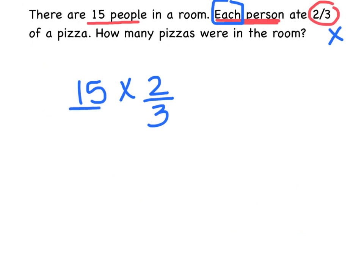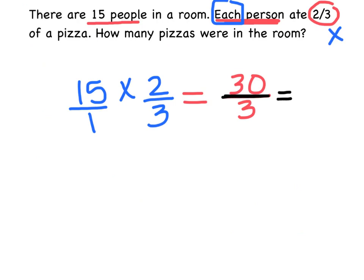Instead of adding two-thirds plus two-thirds plus two-thirds, I'm going to do 15 times two-thirds. To multiply, I need this to be a fraction, so I'm just going to put a 1 underneath it, and then multiply straight across. So I'm going to do 15 times 2, which is 30, and then across the bottom, 1 times 3, which is 3. Finally, I need to simplify this, and I know this line means divide, so 30 divided by 3 is 10. So they ate 10 pizzas total.